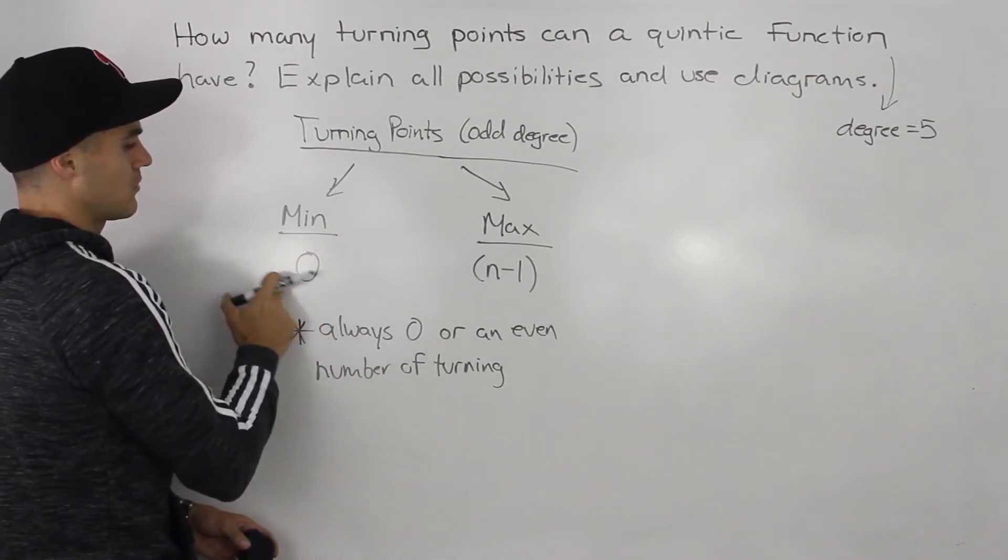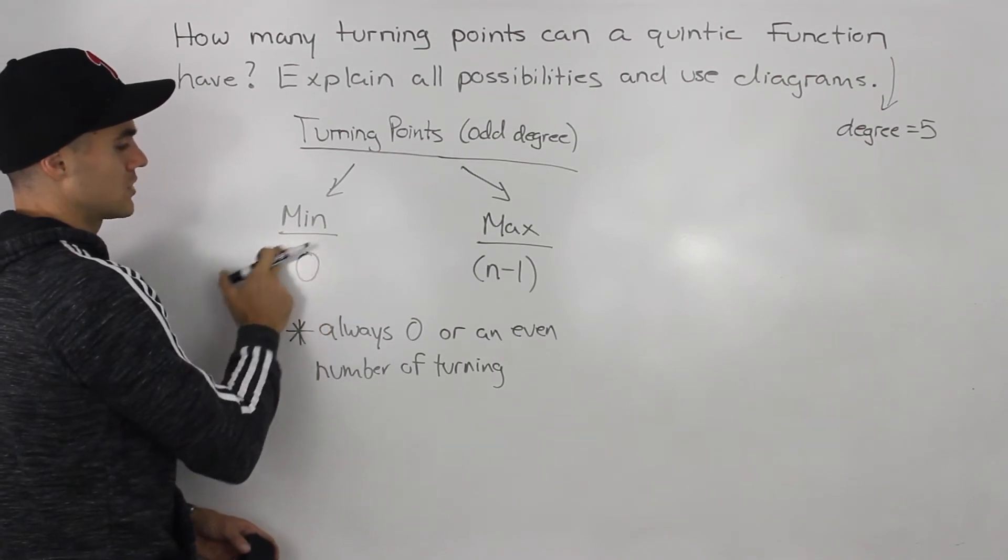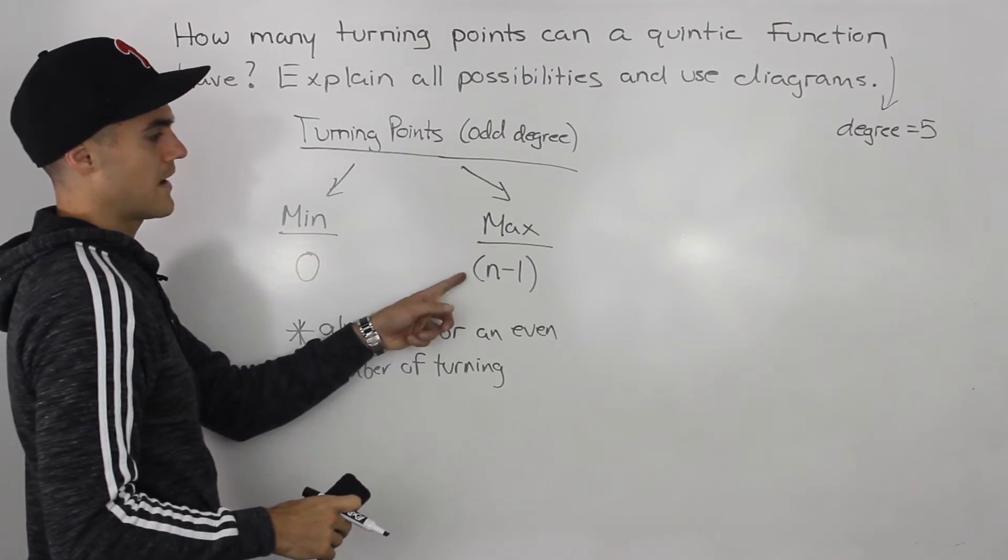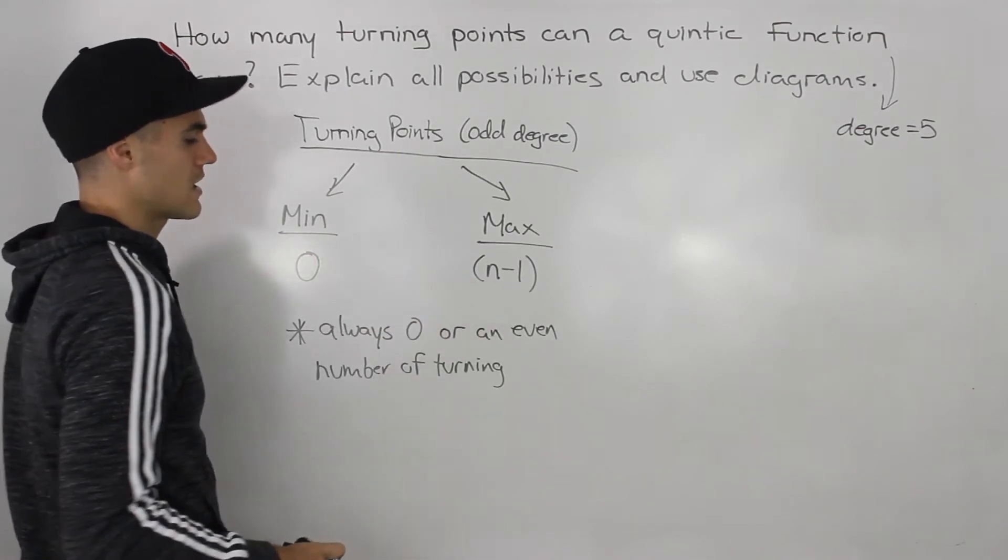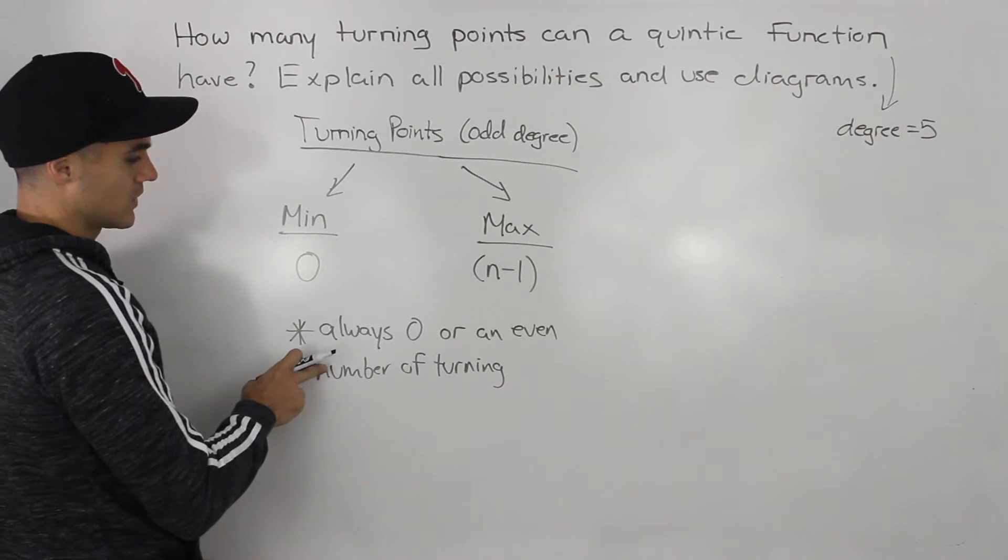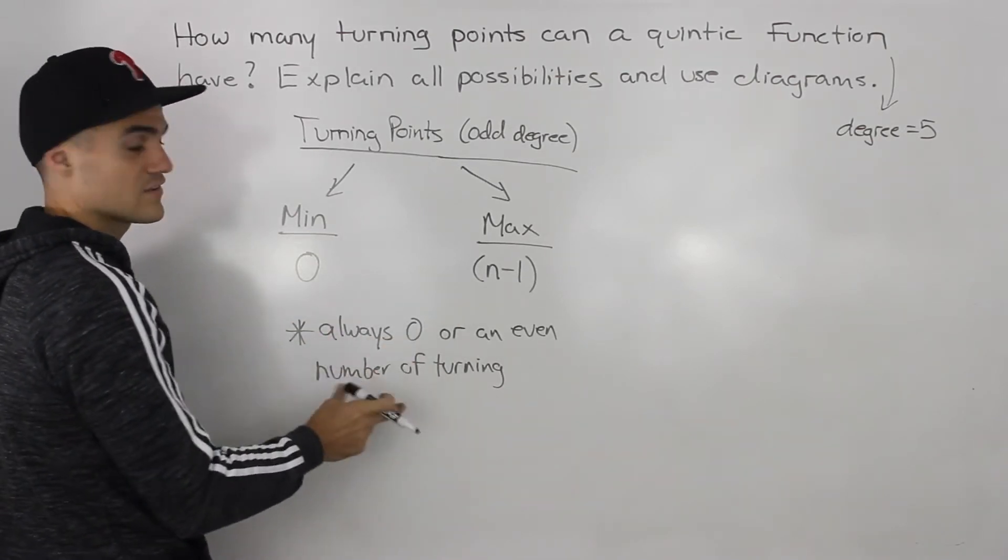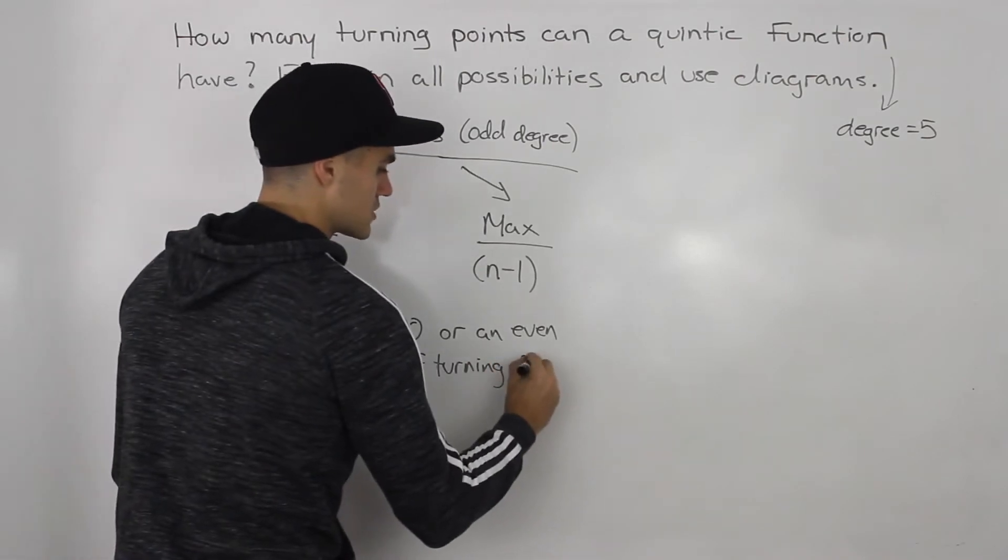An even degree function, if you remember, has a minimum turning point of one - it always has to turn back. But the maximum number of turning points is still n minus one. Going back to odd degree functions, the number of turning points is always zero or an even number.